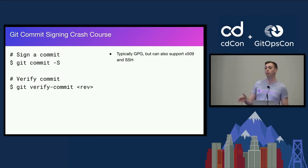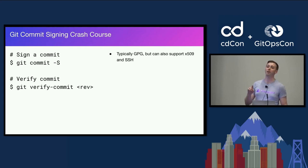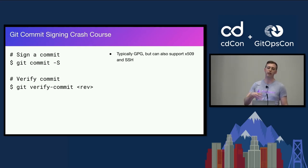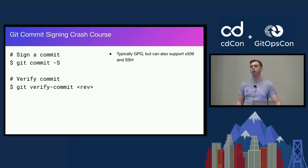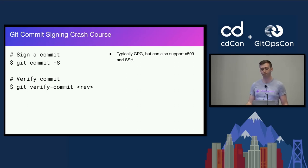A quick overview on how this works: there's a -S flag to cryptographically sign commits — not to be confused with lowercase -s which is for DCO sign-off. You configure Git to tell it what key pair to use. Typically this has been GPG, but in recent years you can also use SSH keys as well as X.509 certificates to sign. Git also has hooks to verify those commits — you can run git verify-commit, give it the revision, and it'll tell you pass or fail.